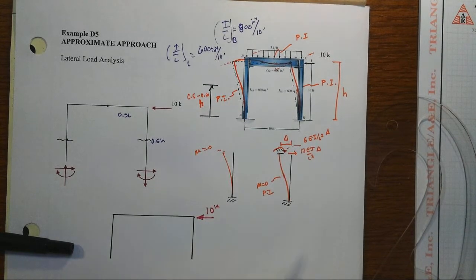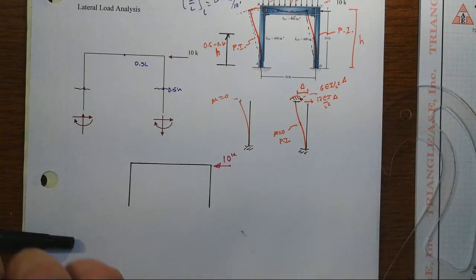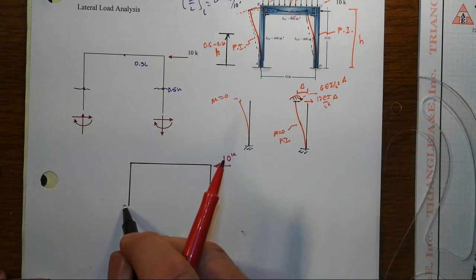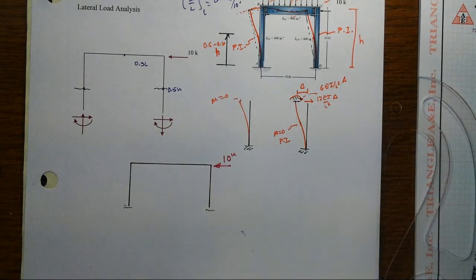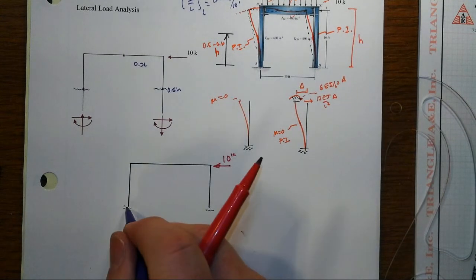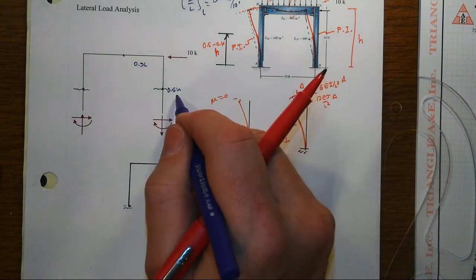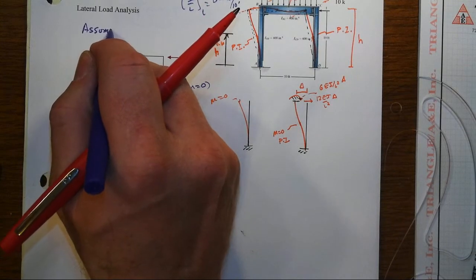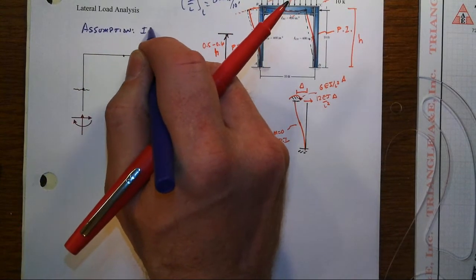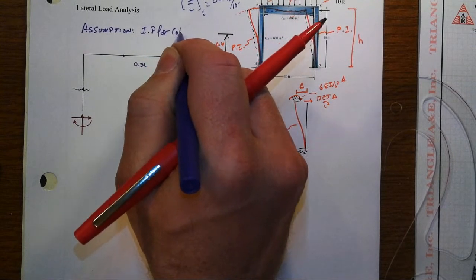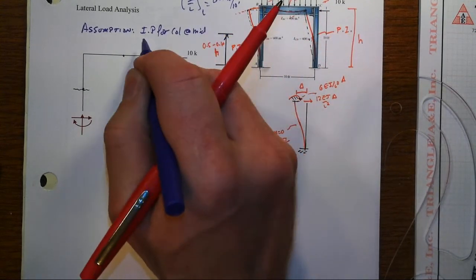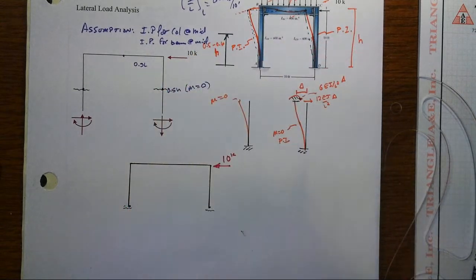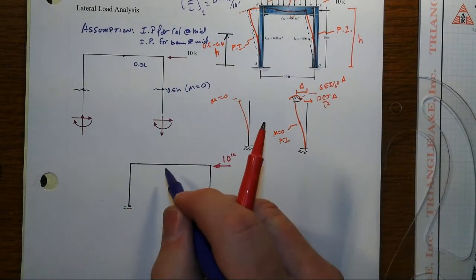We've got our lateral load of 10 kips. Now as we look at this, we have truly cut right where that inflection point is. So to emphasize that, I put the little squiggles that I used to show the cut, and the little dot to indicate the inflection point. That's where we're assuming m equal to 0. Let's even articulate that assumption: inflection point for columns at mid-height and also for the beam at the middle.